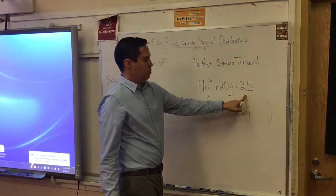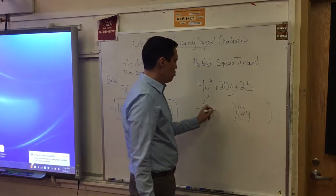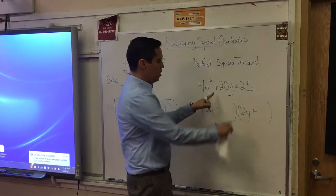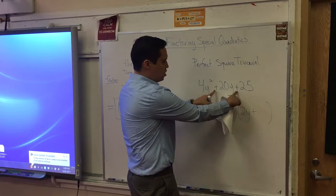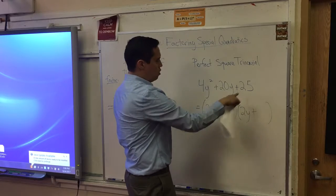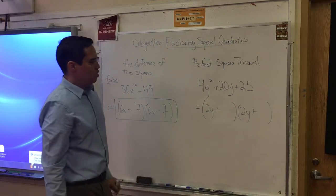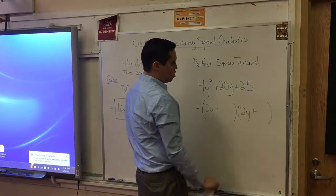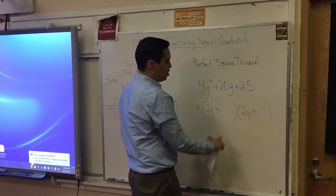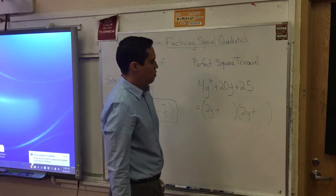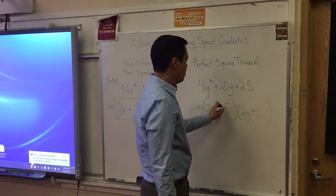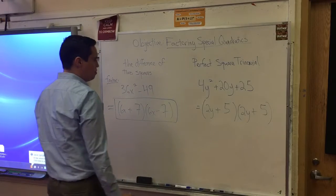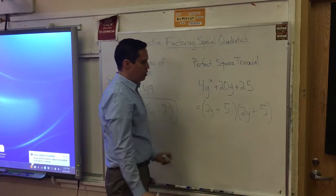So I write those into my first position of each factor. The last term is 25, which is also a perfect square. I'm going to write in a plus here and a plus here. I know it's going to be pluses there because you have to look at this detail. The whole trinomial is positive. So you know that the sign of the constant term inside each factor is also positive.